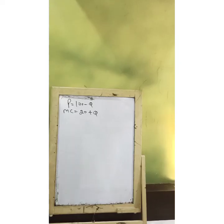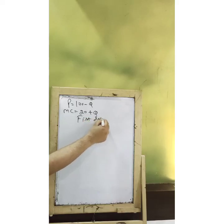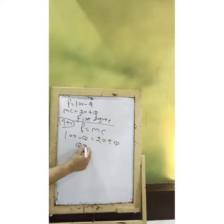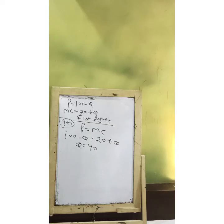So now we have one more example. Suppose we have again a price function and MC as well. Now if there is first degree price discrimination and we need to solve the quantity, you know that we are going to use P equals MC. So 100 minus Q equals 20 plus Q, and that shall give us Q as 40. Now the question is: why are we using P equals MC? In the normal scenario, we use MR equals MC because that is the level where profit is maximized. So what is the rationale here to use P equals MC instead of MR equals MC?